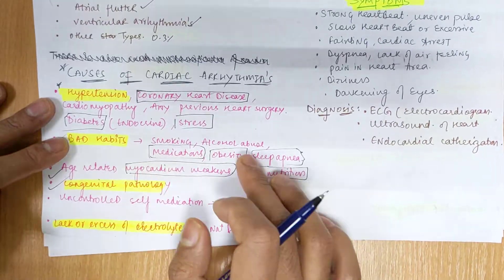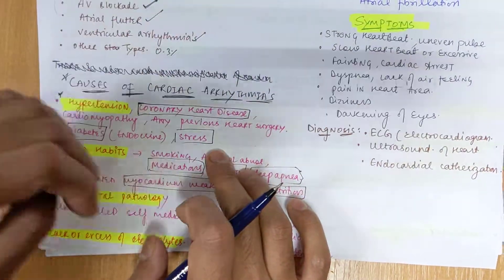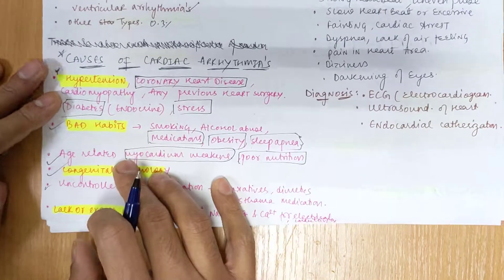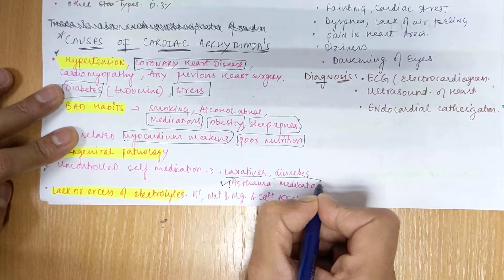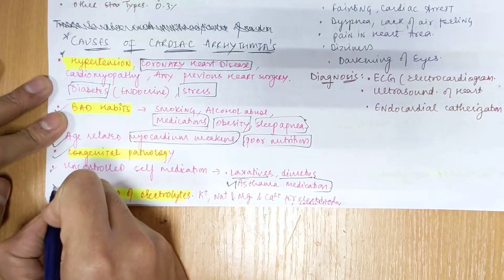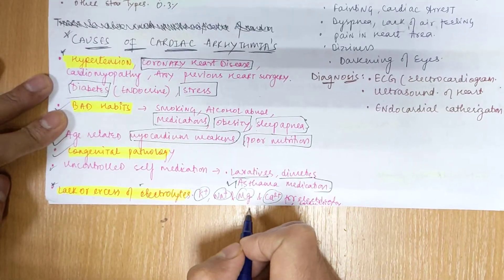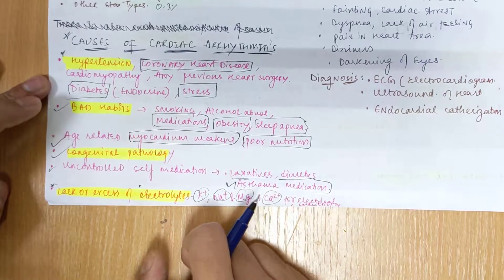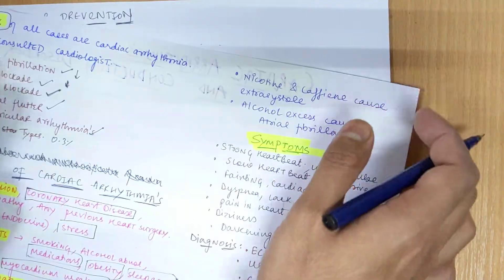There can also be congenital pathologies — abnormalities present by birth in the heart that can further lead to arrhythmia as age progresses. Uncontrolled self-medication, such as taking laxatives, diuretics, or asthma medications, can have side effects leading to cardiac arrhythmia over a longer duration. Additionally, a lack or excess of electrolytes like K+, Na+, magnesium, and calcium can lead to arrhythmia because they control electrical conductivity and transmission of impulses.